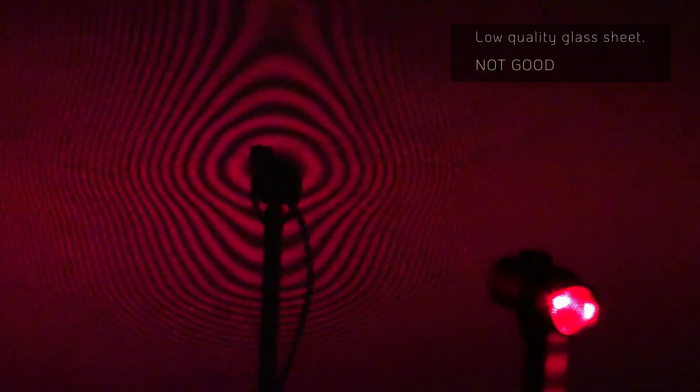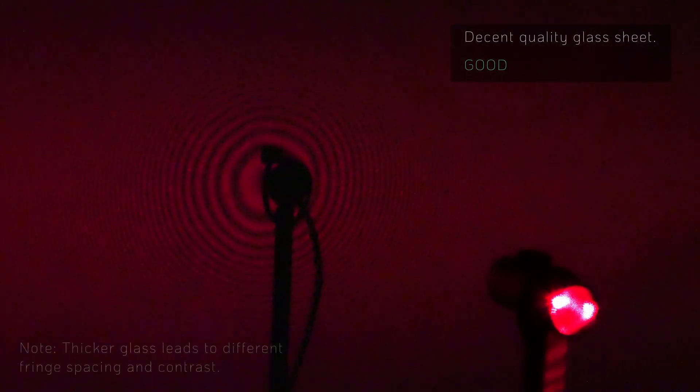The example you see here is produced by a low quality glass sheet with noticeable surface distortions. In contrast, the second example shows a glass sheet of good quality with circular diffraction rings.